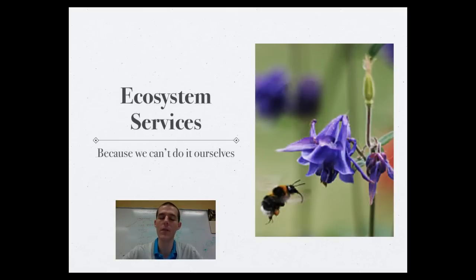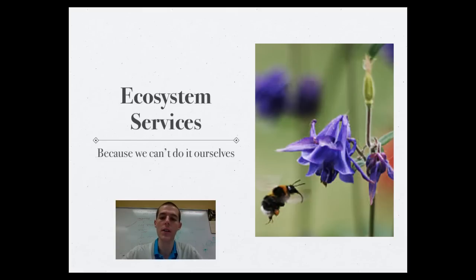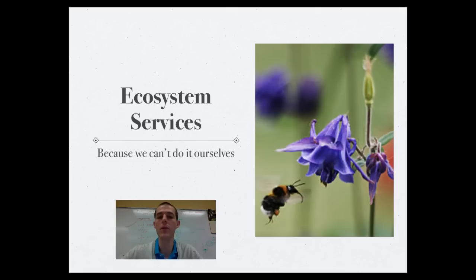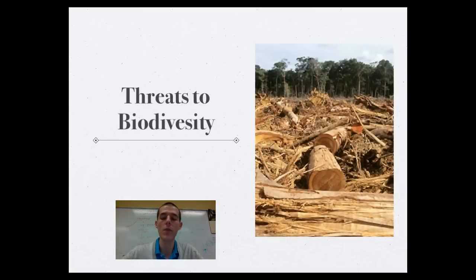Another reason is ecosystem services — things the earth does for us for free that we either couldn't do ourselves or would be terribly expensive to do. Examples include the foods we eat, animals that pollinate flowers, water and air filtration, building resources, medicines, and even the beauty of a sunset. Every time a habitat is lost, we risk losing ecosystem services that keep us alive but that we can't replicate ourselves.